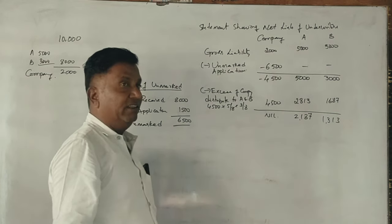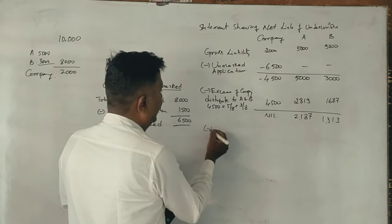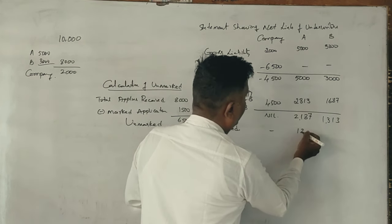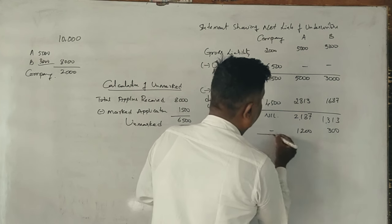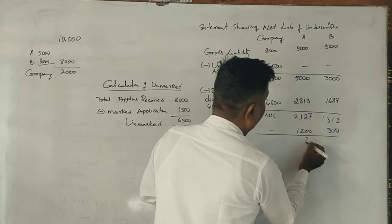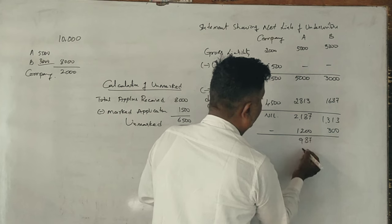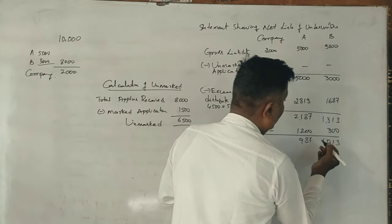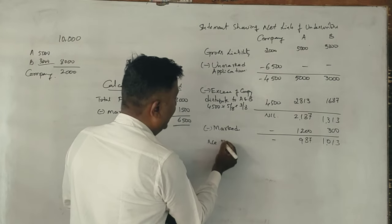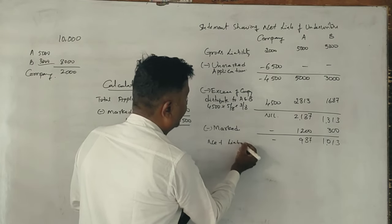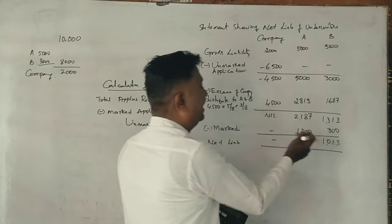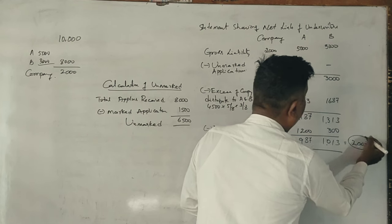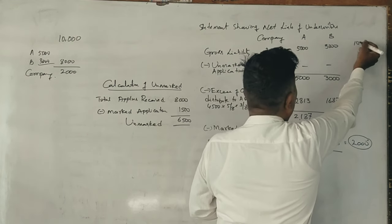After accounting for marked applications - A had 1,200 marked, B had 300 marked - net liability is A = 987, B = 1,013. Total marked 2,000, total issued 10,000.